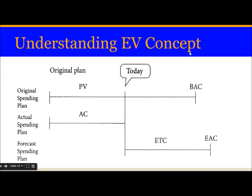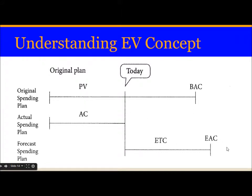This diagram illustrates the earned value concept. We are here today — the planned value is at one point, and the budget at completion is further along. The actual cost shows how much we have incurred to date. The estimate to complete shows how much more cost is required from today to finish the project, and the estimate at completion was set at the start of the project.